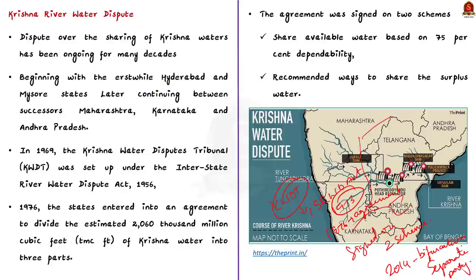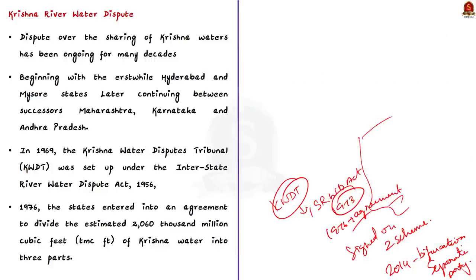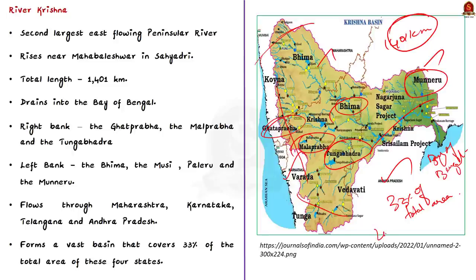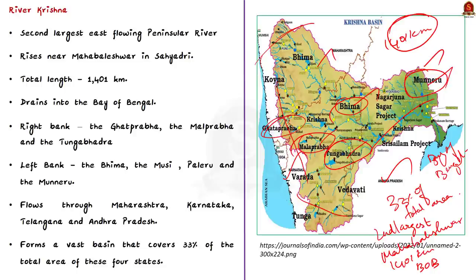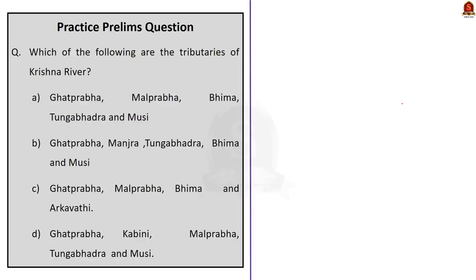That's all regarding this news article. To summarize: Krishna River is the second largest east-flowing peninsular river, rising near Mahabaleshwar in the Sahyadri, with a length of 1,401 km, draining into the Bay of Bengal. Important right bank tributaries include Ghataprabha, Malaprabha and Tungabhadra. Left bank tributaries include Bhima, Musi, Palleru and Munneru. It flows through Maharashtra, Karnataka, Telangana and Andhra Pradesh, bounded by the Balaghat range on the north, Eastern Ghats on the south and east, and Western Ghats on the west. We also saw details about the Krishna water-sharing dispute.